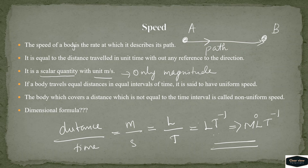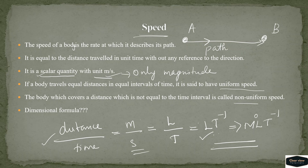To summarize speed: based on unit time, the distance covered is called speed. Speed equation is distance by time. Speed is a scalar quantity, unit is meter per second, dimension is L by T. Uniform speed means equal distance in equal intervals of time. Non-uniform speed means unequal distances in equal intervals of time.